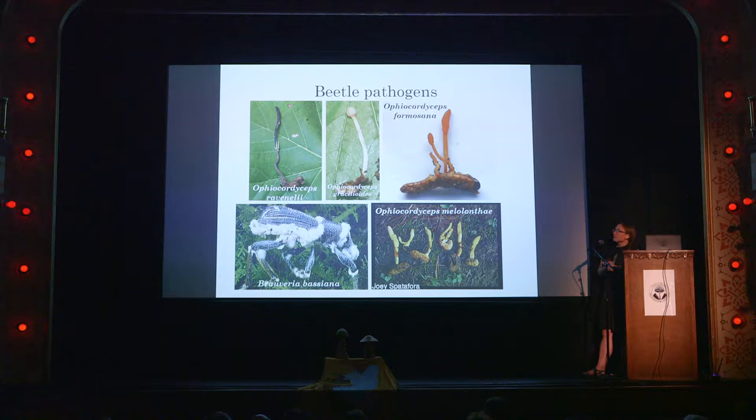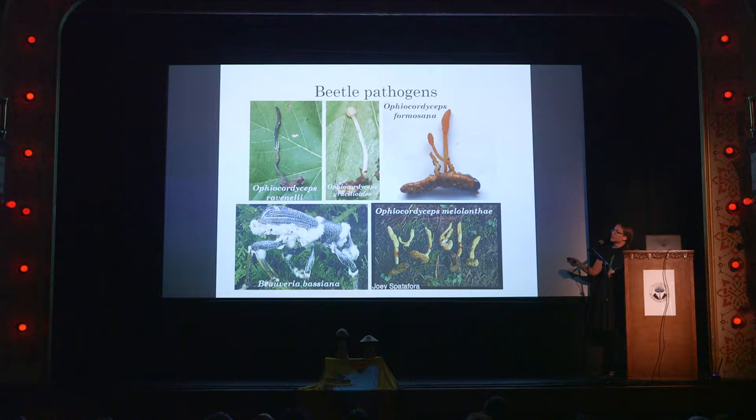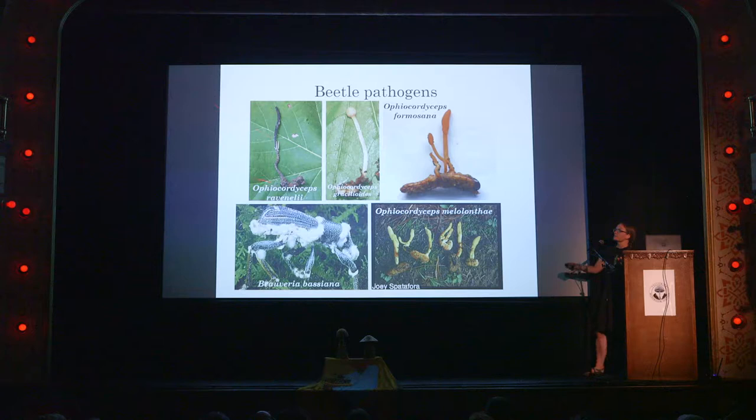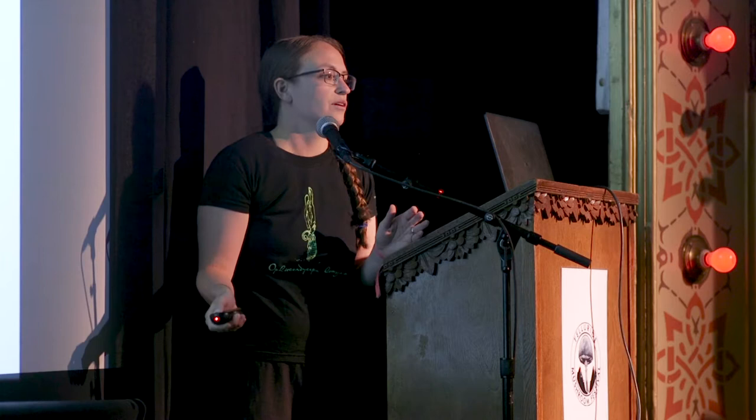Some of the common beetle pathogens include probably one of the most commonly collected cordyceps in eastern North America, Ophiocordyceps melolonthae. Most of these are highly specific to the group of coleoptera beetles they infect. Ravenelii is another North American species, and Grosselioides and Formosana are Asian taxa. You'll notice these beetle pathogens infect larvae buried in soil or wood and then form nice stipitate fruiting structures, whereas an adult beetle pathogen like Beauveria bassiana just forms spores in cracks in the exoskeleton rather than a large fruiting structure.